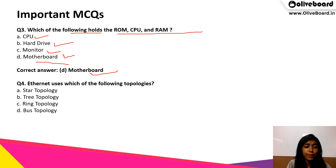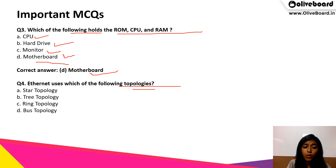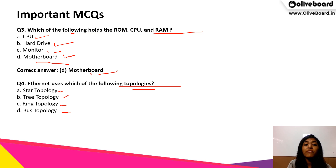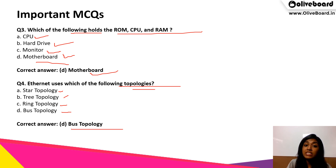Next question: Ethernet uses which of the following topologies? The options are star topology, tree topology, ring topology, or bus topology. When we talk about Ethernet, bus topology is the correct answer.